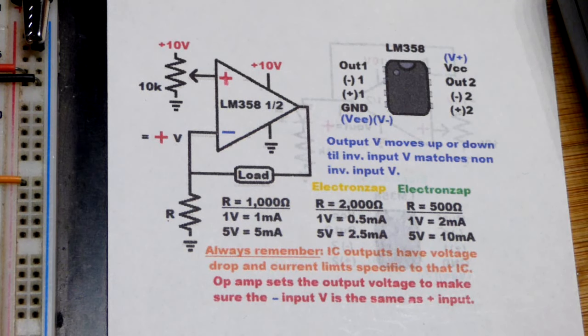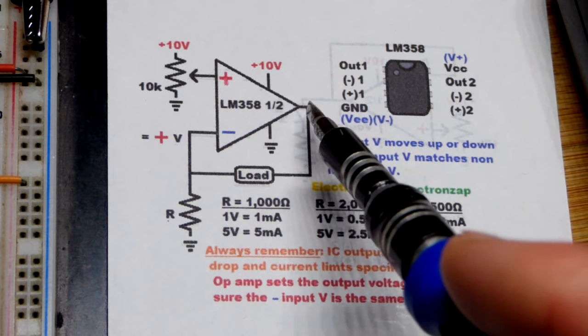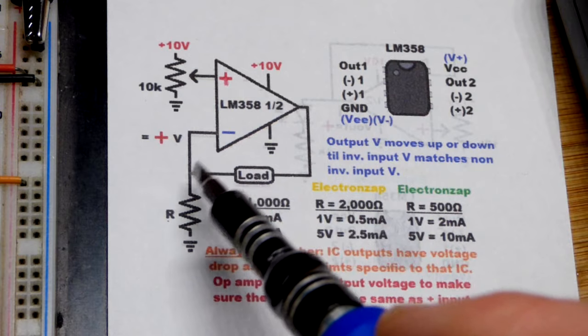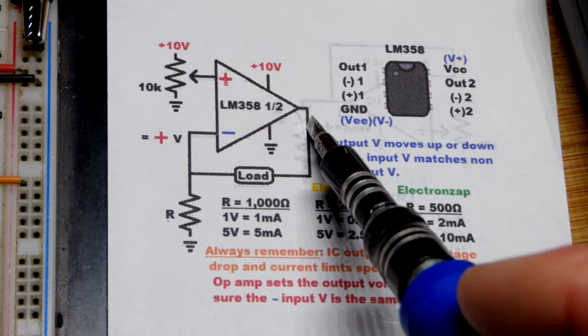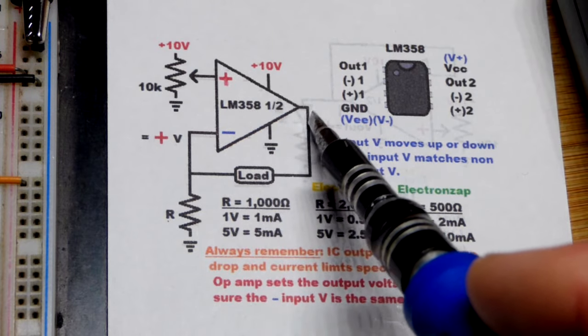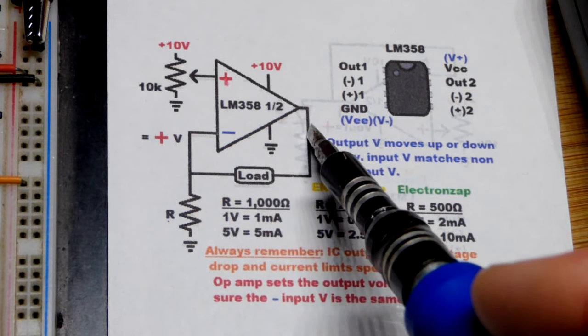So in any case, yeah, hopefully that all makes sense. It's a really cool circuit. To get more power you also use a transistor, which again gets you a little less of voltage that you'll be able to use. But transistors can provide a lot more current than the output of the LM358.